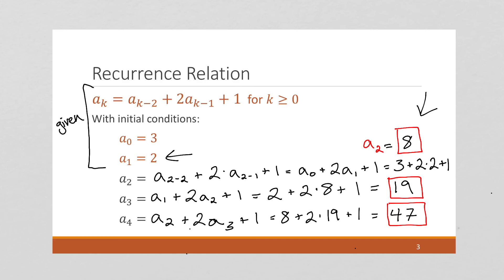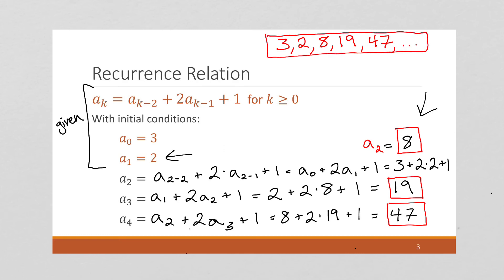So we can write the informal definition of this sequence as three, two, eight, 19, 47, dot dot dot. As you can tell, that would be very difficult to guess if you were just given this informal definition — it'd probably be very confusing as to what's going on. So while this is a complicated recurrence relation, at least it's formally defining this very complex sequence.